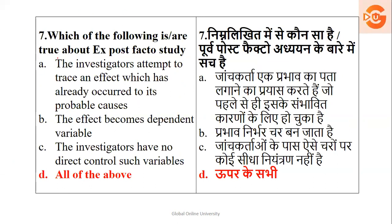Which of the following is true about ex post facto study, also called descriptive study? The investigators attempt to trace an effect which has already occurred to its probable cause — studying cause and effect. The effect becomes the dependent variable, and investigators have no direct control over such variables. All these are true statements for the given question. So option C and D are the right answers.